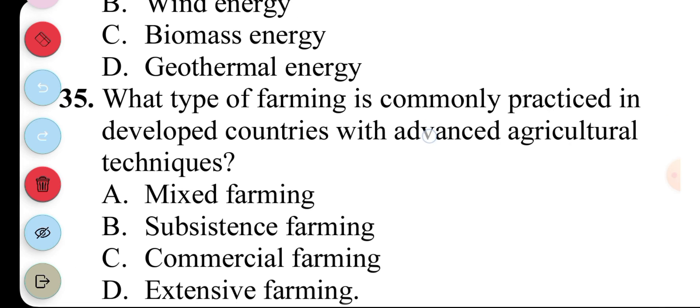Question 35. What type of farming is commonly practiced in developed countries with advanced agricultural techniques? A. Mixed farming, B. Subsistence farming, C. Commercial farming, D. Extensive farming. The answer to question 35 is C. Commercial farming.